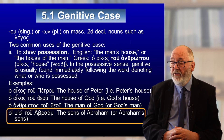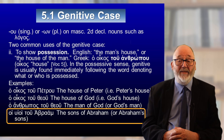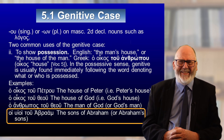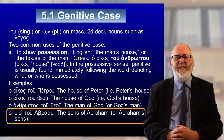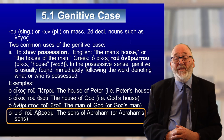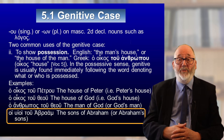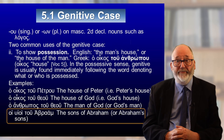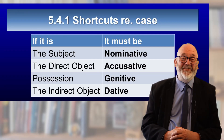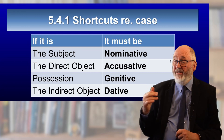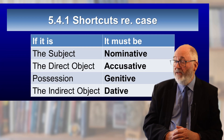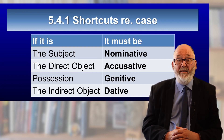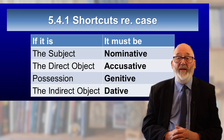Ho huioi tou Abraam — the sons of Abraham. It's not quite possession — Abraham has sons — but it shows a relationship that the sons have with Abraham: he is their father. In other videos, I've shown that the subject must be nominative, the direct object must be accusative, and the indirect object must be dative. We can add to that list and say: possession must be expressed with a genitive.